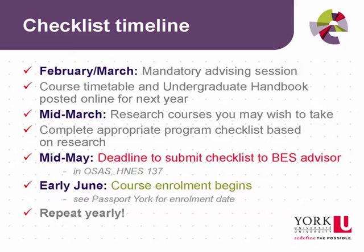Between mid-March and mid-May, you'll need to submit your completed checklist to the BES Program Advisor, located in the Office of Student and Academic Services, or OSAS for short, in the HNES Building, Room 137. Once the form has been reviewed and approved by the Program Advisor, you may be able to enroll in courses when registration access becomes available. Access dates begin in early June. You can log into your Passport York account to look up your personal registration access date.